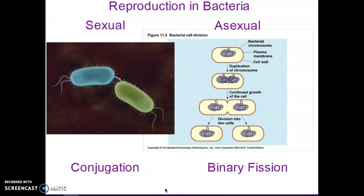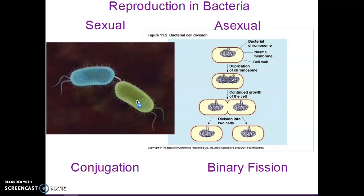Bacteria can reproduce sexually and asexually. Sexual reproduction basically means they have a partner — they exchange some of their DNA and then split themselves in half. Asexual reproduction involves only one bacteria: it copies its DNA and splits itself in half, which is called binary fission. Partner equals sexual; no partner equals asexual.